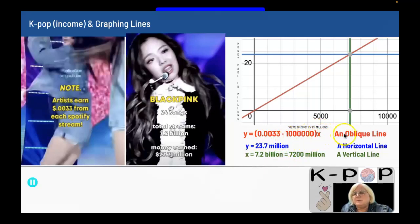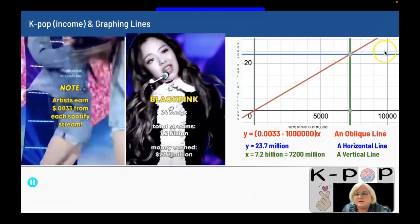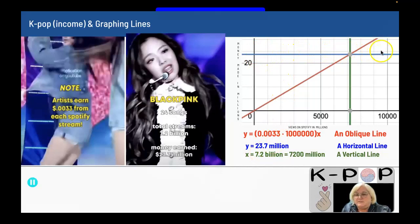This is an oblique line — whenever I have something times X, it's an oblique line. When I have Y equals a number, that's a horizontal line. The blue line is a horizontal line because there's no X in it, so Y is always that number no matter what X is. That's the 23.7 million line.